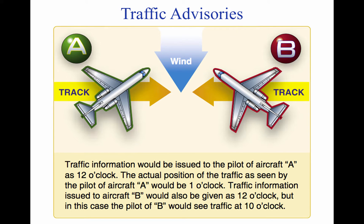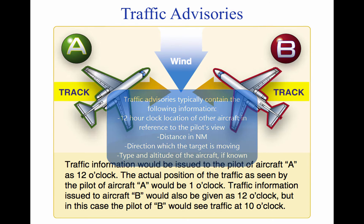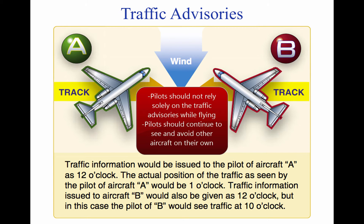ATC issues traffic advisories based on observed radar targets. Traffic is referenced by azimuth from the aircraft in terms of the 12-hour clock, as well as distance in nautical miles, direction in which the target is moving, and type and altitude of the aircraft if known. An example would be: 'Traffic, 10 o'clock, 5 miles eastbound, Cessna 152, 3000 feet.' The pilot should note that traffic position is based on the aircraft track, and wind correction can affect the clock position. This service is not intended to relieve the pilot of the responsibility to see and avoid other aircraft.